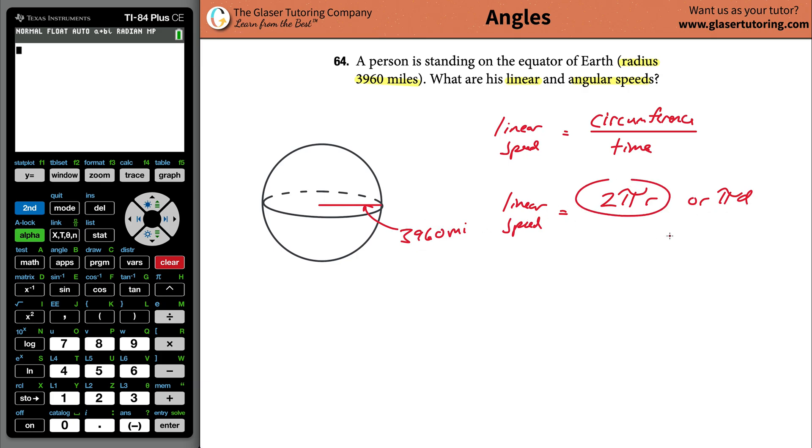The time it takes to travel the entire circumference, the time it takes to go around. How long does it take to go around the Earth once? How long does it take the Earth to rotate once? Exactly, 24 hours.